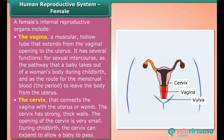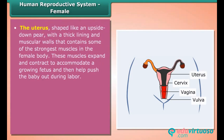The opening of the cervix is very small, but during childbirth the cervix can expand to allow a baby to pass. The uterus is shaped like an upside-down pear with a thick lining and muscular walls that contain some of the strongest muscles in the female body. These muscles expand and contract to accommodate a growing fetus and then help push the baby out during labor.